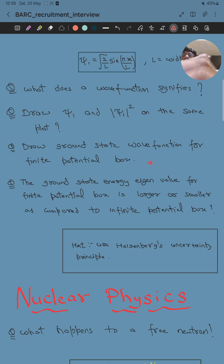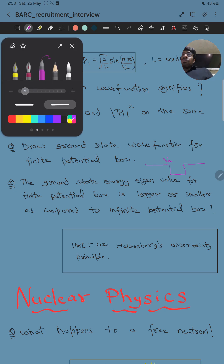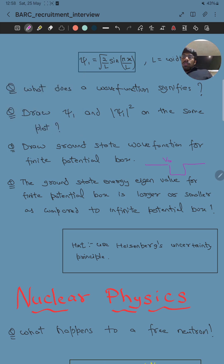The next question was to draw the ground state wave function for the finite potential box. You know the finite potential box, this is the finite potential box. Then he asked me to use Heisenberg uncertainty principle.